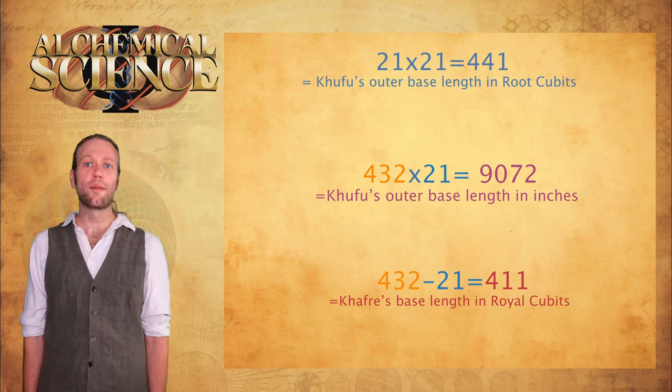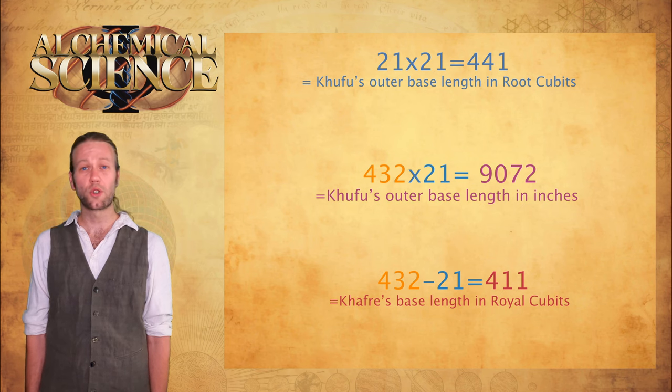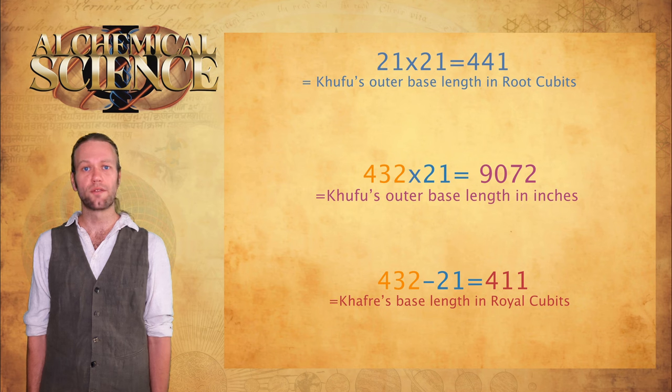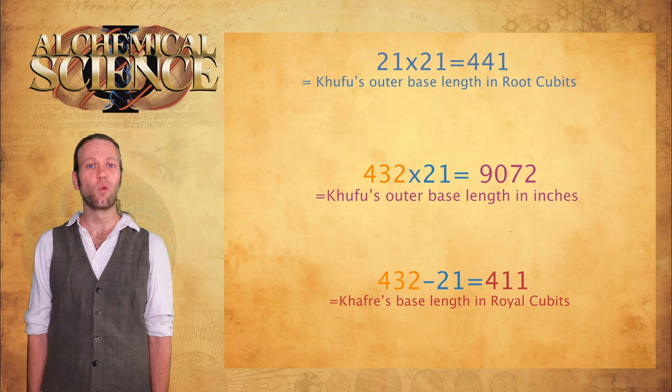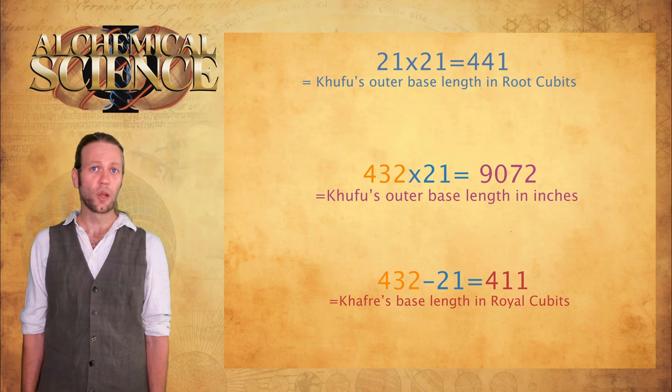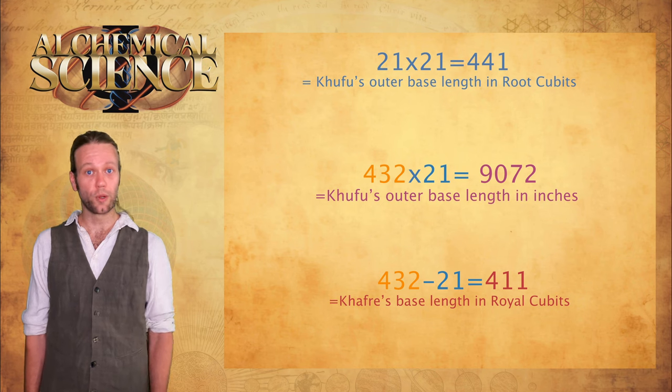Here we found another measurement of Giza, this time 9072 inches being the measure of the outer base length of the pyramid Khufu. Now one last time, if we take 432 again, but this time we subtract 21, this equals 411. In 411, we have the base length of the pyramid of Khufu in royal cubits. So what is a royal cubit as opposed to a root cubit?